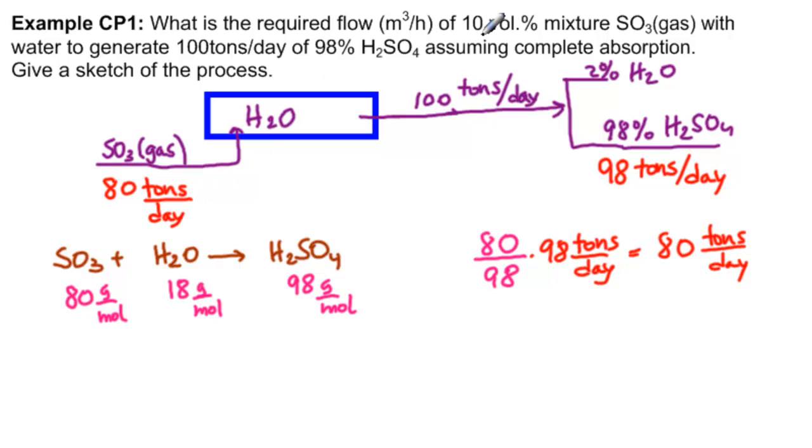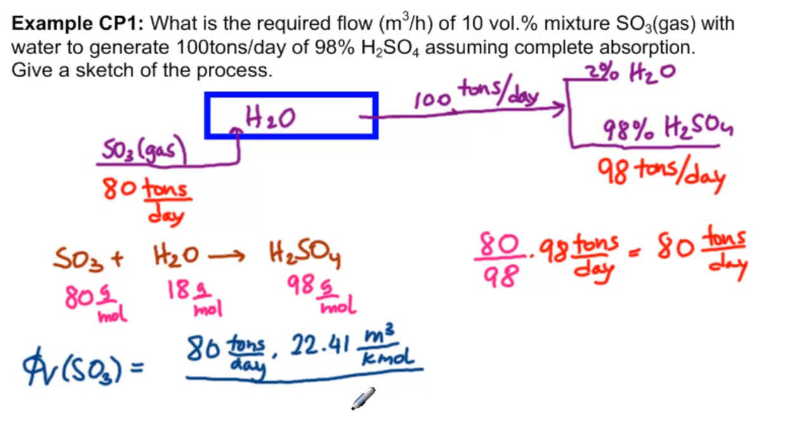Now that's not the answer to the question because we need it in meters cubed per hour. So the volumetric flow of SO3 equals the mass flow times the molar volume of gas, which is 22.41 meters cubed per kilomole, divided by the molar mass of SO3, which is 80 kilograms per kilomole, times 24 hours in a day.